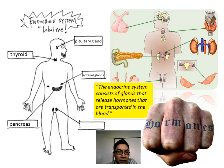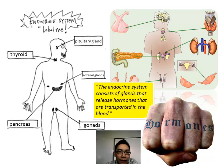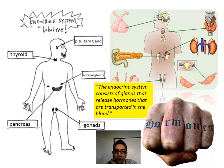The pancreas is probably the most well-known, and it's also involved in digestion. You've learned a little bit about that, but the pancreas has a dual role — it also fits in the endocrine system because of the hormones it produces. And the gonads, which would be the ovaries or the testicles depending on whether you're a woman or a man.